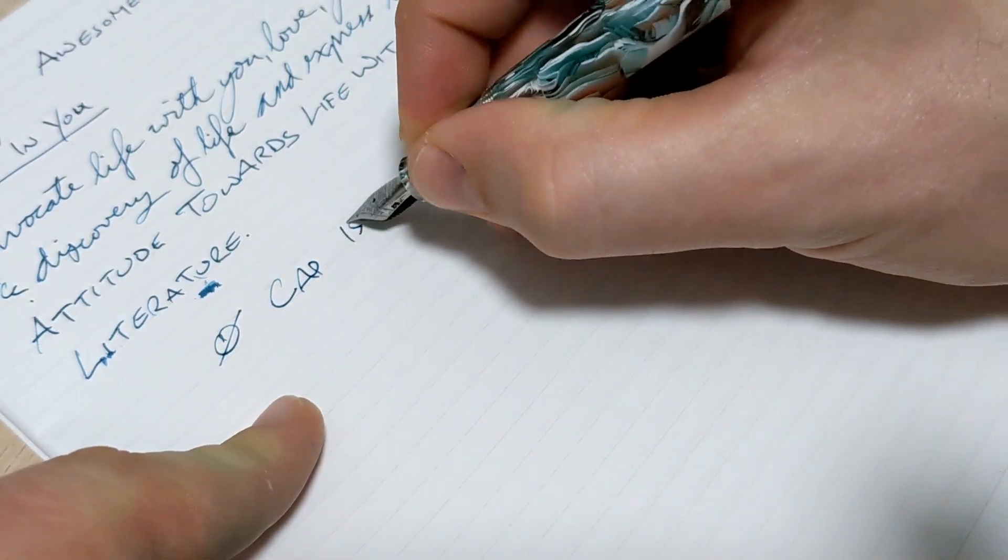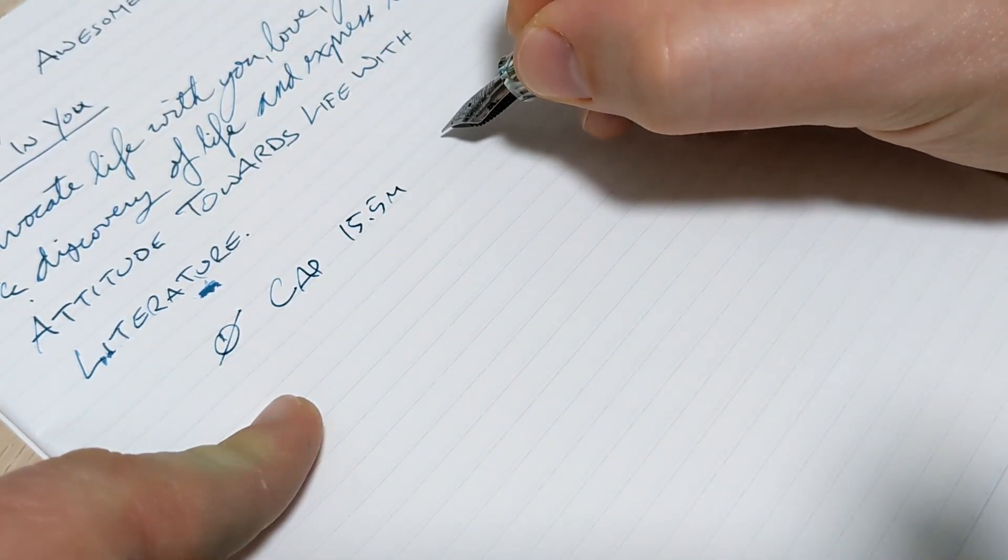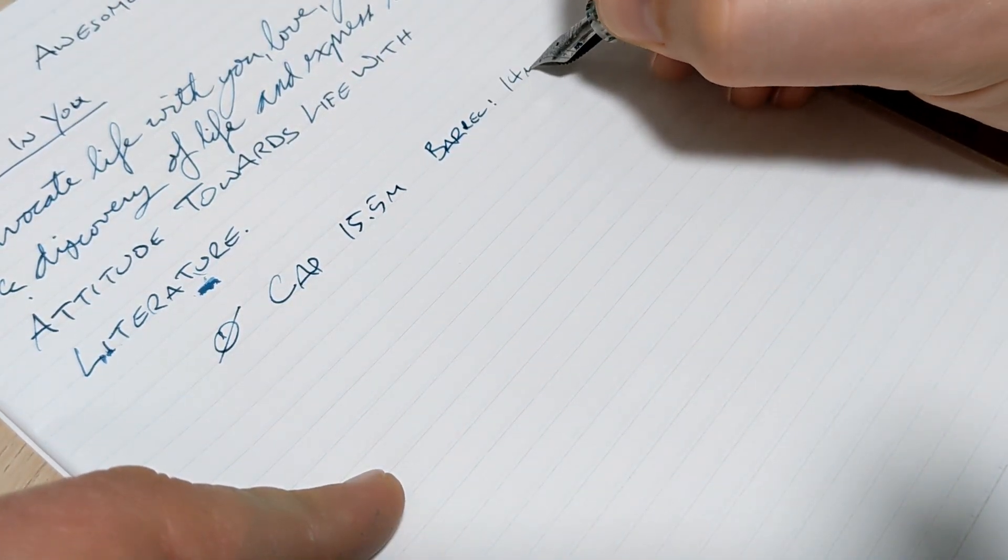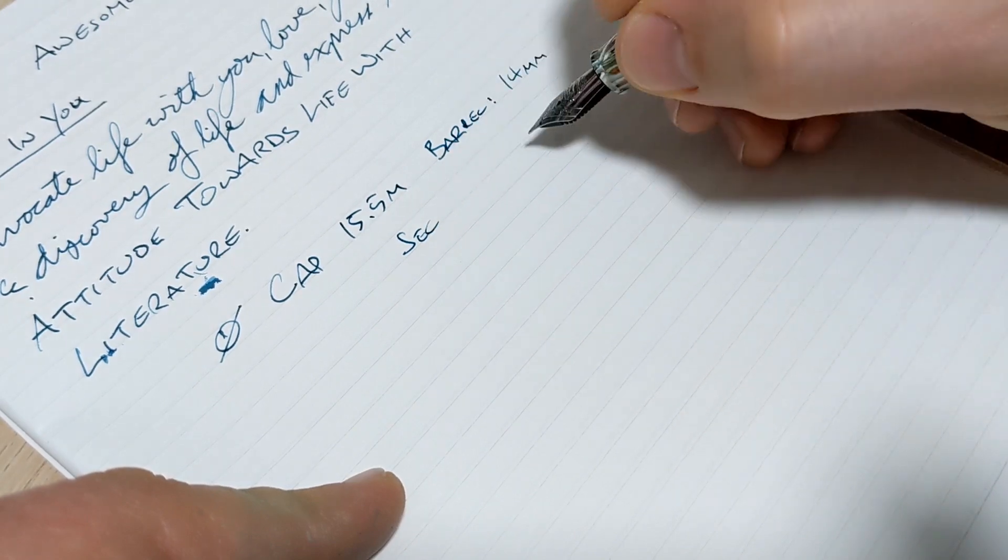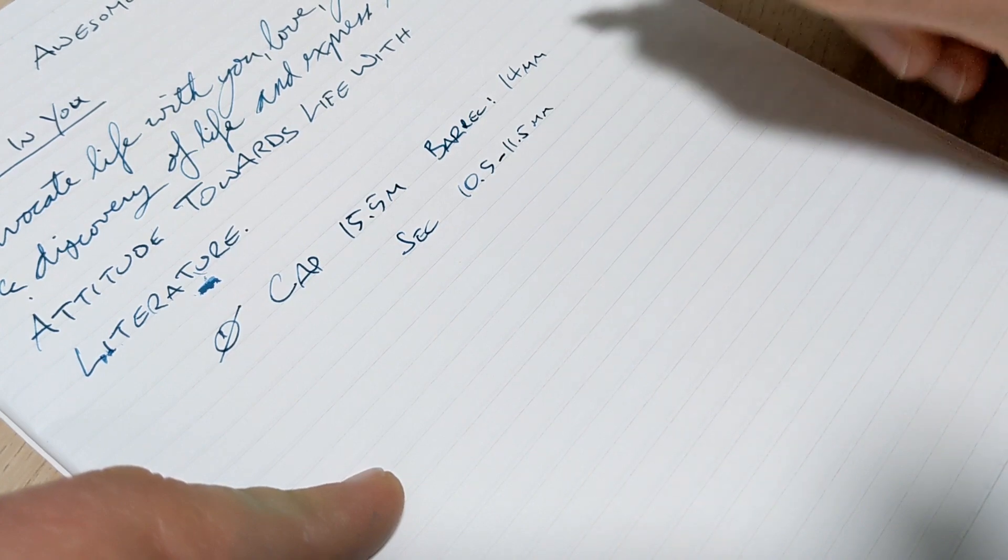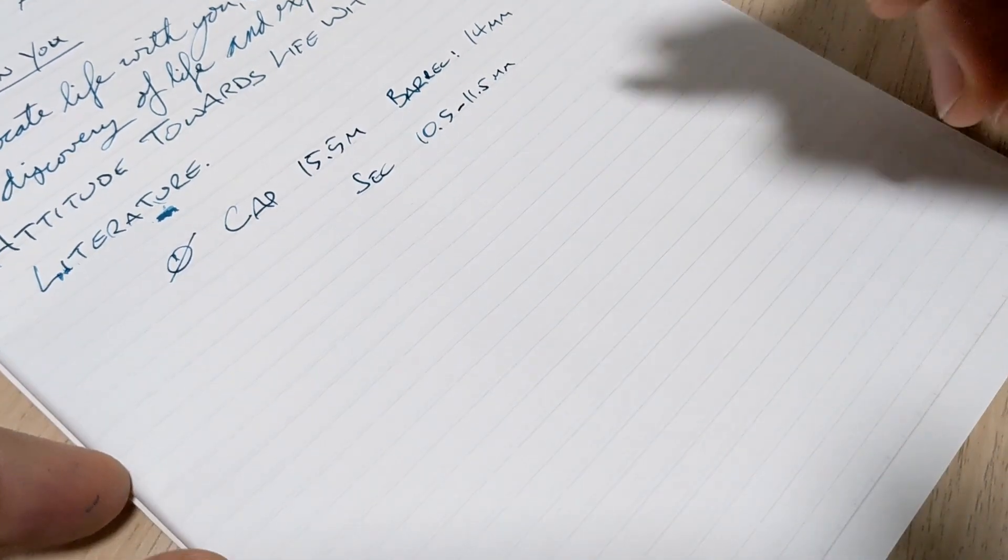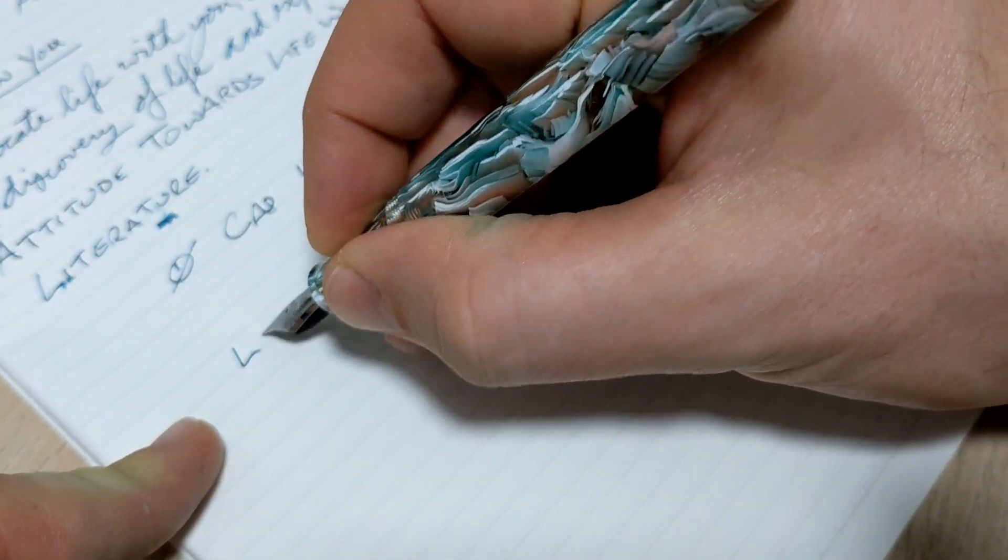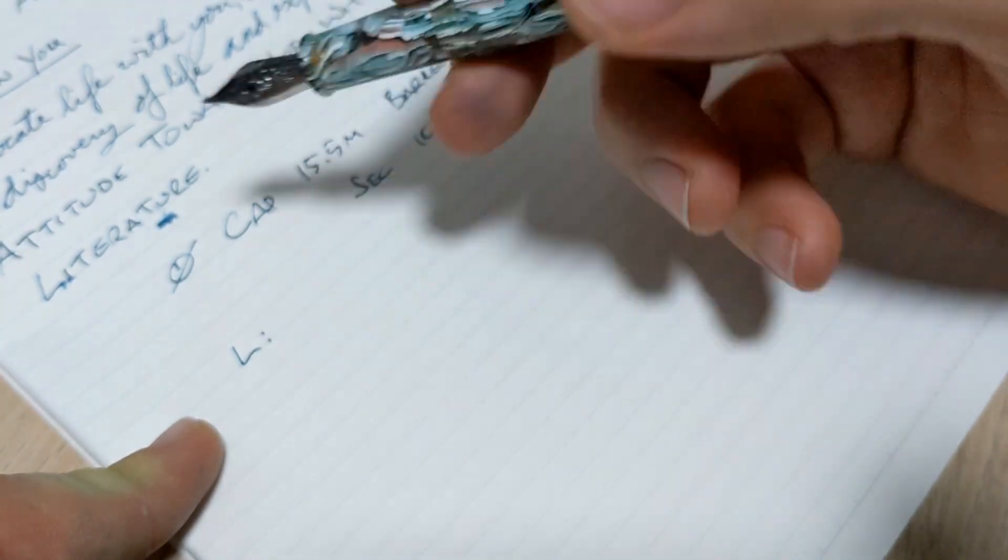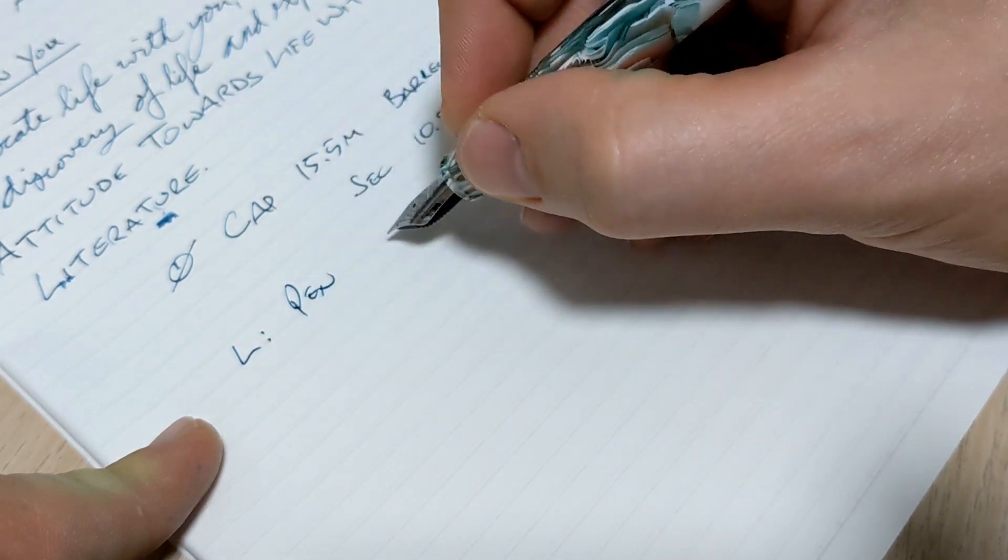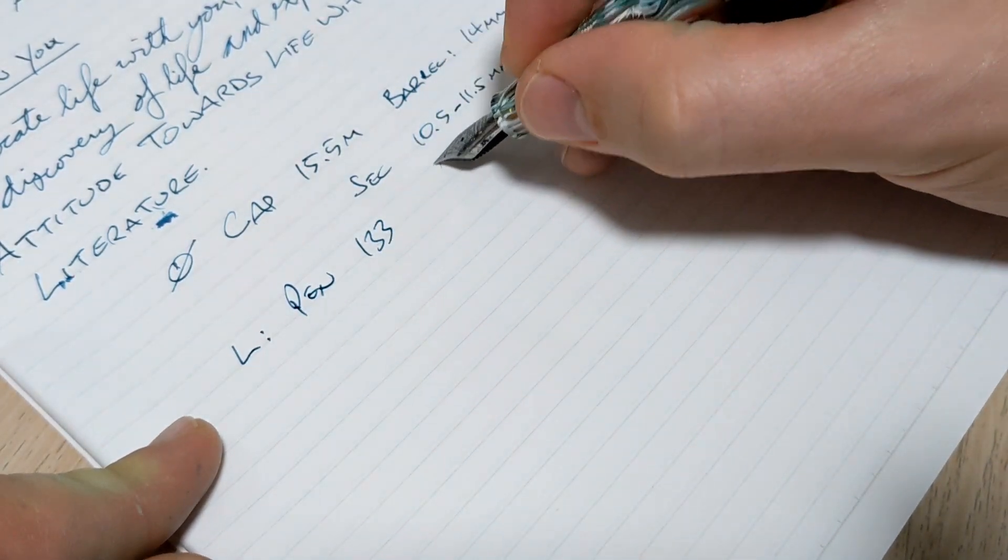The barrel, the main barrel of the pen here, is 14 millimeters. The section has a bit of a taper, it goes from about 10.5 to 11.5 at the top. All in all, those are good numbers for girth and section size, these are very comfortable numbers. As far as overall length of the pen itself, just the pen body with the nib is 133 millimeters, and the whole pen capped is 143 millimeters.